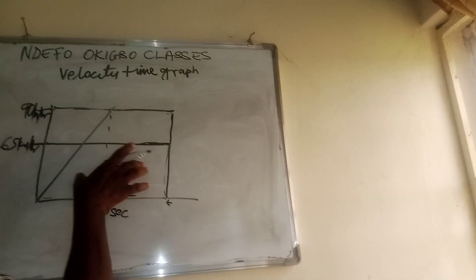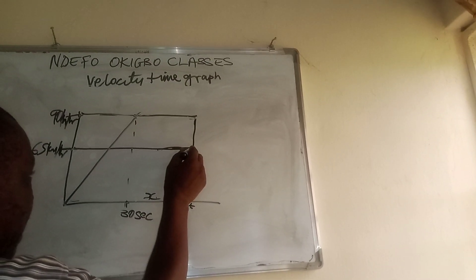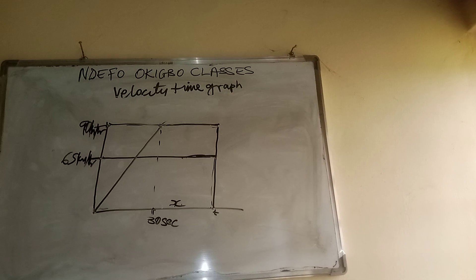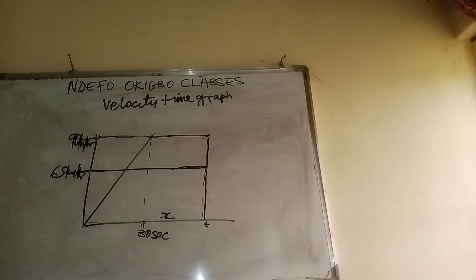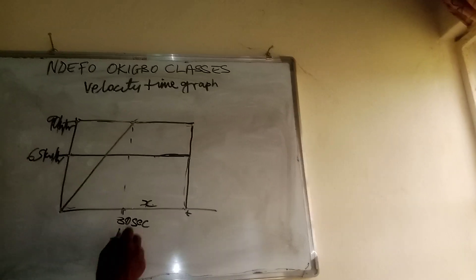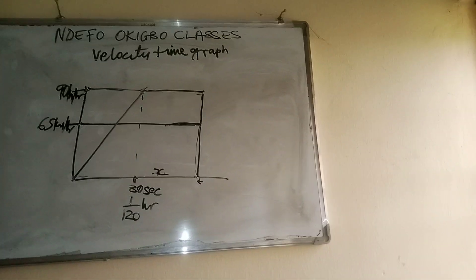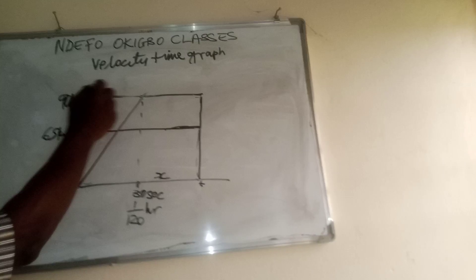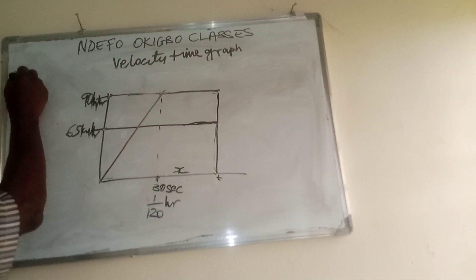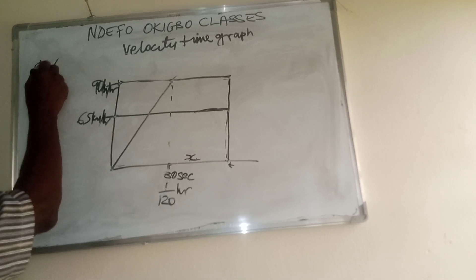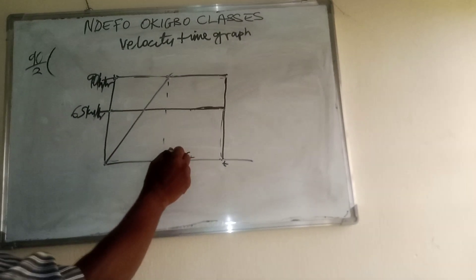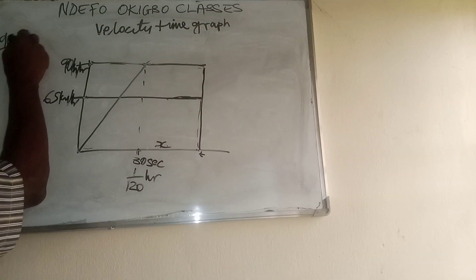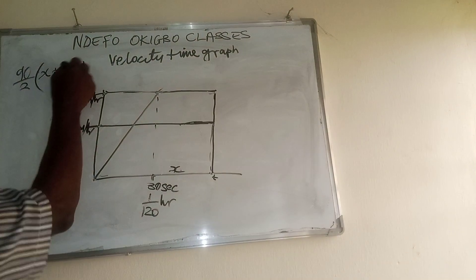Since we are working in kilometers per hour, 30 seconds is 1 over 120 hours. The distance traveled by the second car is the trapezium area: 90 over 2, times the sum of the two parallel sides, which is X plus X plus 1 over 120.